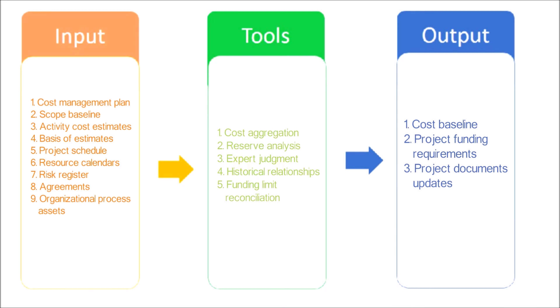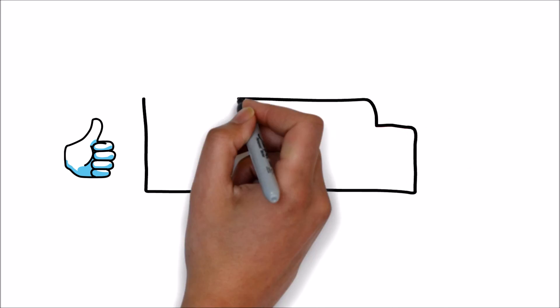Now let's see the outputs of this process. The Cost Baseline is the approved version of the time-phased project budget, excluding any management reserves, which can only be changed through formal change control procedures and is used as a basis for comparison to actual results. Project Funding Requirements — both total funding requirements and periodic funding requirements — are derived from the cost baseline. The process also produces Project Documents Updates and Funding Requirements.